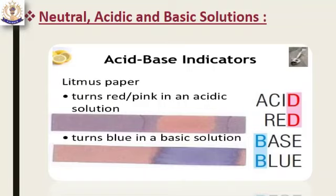We can cancel the common ions on both sides of the equation — chloride ions and sodium ions on each side. These ions are called spectator ions because they do not participate in the reaction. We are left with H⁺ and OH⁻ ions, which react to form water. A net ionic equation shows the species actually involved in the reaction. The net ionic equation is: H⁺ + OH⁻ → H₂O. Sodium and chloride ions were only the spectator ions.